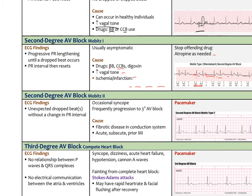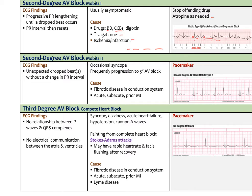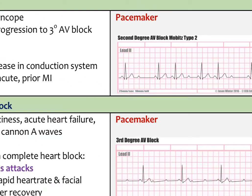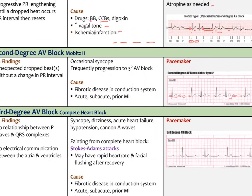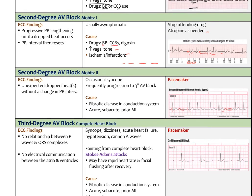Mobitz type 2 is also a second degree AV block, but here we get an unexpected dropped beat without any change in the PR interval. Looking at the ECG, we get a P wave and QRS complex, but then suddenly there's a P wave with no QRS complex — the atrial signal is simply not getting down to the ventricles. This is more serious than Mobitz type 1; people get more syncope from it, and it typically indicates fibrotic disease in the conduction system — scarring from MI or longstanding atherosclerotic changes. This usually requires a pacemaker because it can quickly degenerate into a third degree AV block.